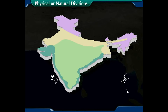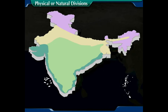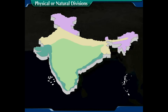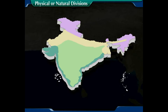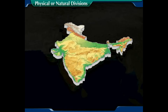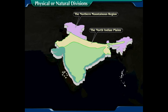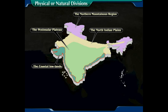These broad divisions are totally different from each other, and each has a distinctive regional personality. These divisions contrast with each other and have their own potentials and challenges. The five physical divisions are: A) the northern mountainous region, B) the north Indian plains, C) the peninsular plateau, D) the coastal lowlands, and E) the islands.